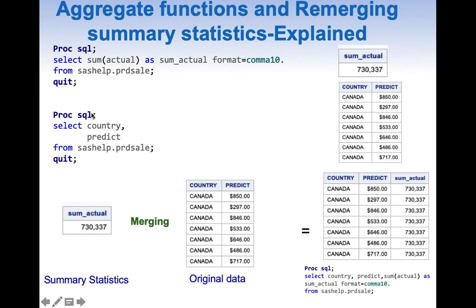In the second step, it takes care of all the SELECT columns which did not have an aggregate function and gives the result here. Once these two results are ready, the merging happens and we get the final result. All of this happens under the hood — we do not see all these intermediate results; we directly see one final result.